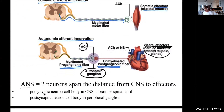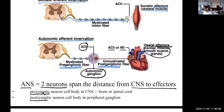The autonomic system has two neurons that span the distance from the central nervous system to the effectors. One is called pre-ganglionic or pre-synaptic, and the other is post-ganglionic or post-synaptic — they're synonymous.